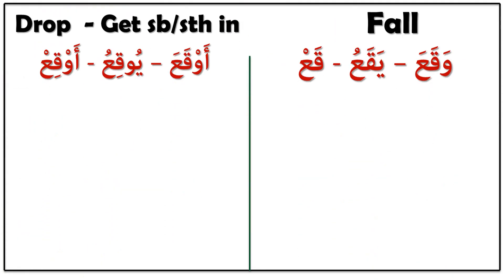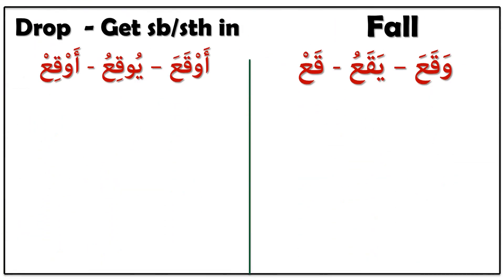Let's start with the first verb: وَقَعَ (waqaa), يَقَعُ (yaqa'u), قَعْ (qa'). It means 'to fall.' وَقَعَ is the past tense (maadi), يَقَعُ is the present (mudari'), and قَعْ is the command (amr). Please look at the first sentence.